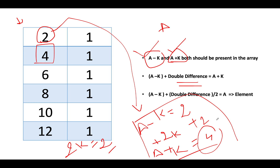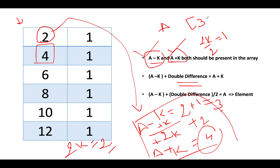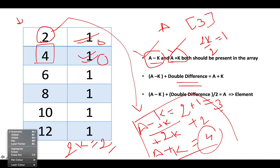We look for the value of a. We have a-k=2, and we know 2k=2, so k=1. Therefore a-k+k = 2+1 = 3. So a equals 3 — the first element identified is 3. We then reduce the frequency of both 2 and 4 to 0 since we have consumed these two elements. Let's proceed to the next iteration, changing the pen color.